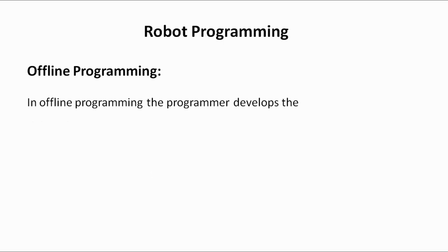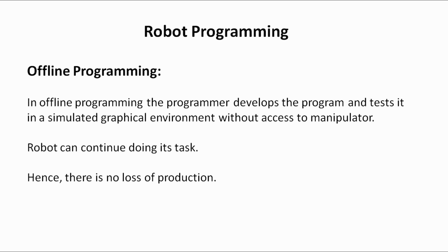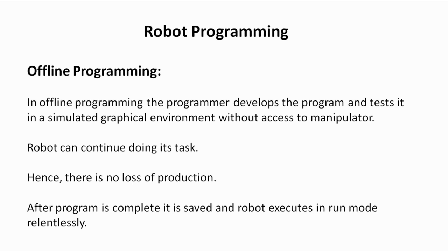In offline programming, the programmer develops and tests the program in a simulated graphical environment without access to the manipulator. The manipulator is not engaged — it continues the production process while the programmer writes and tests the program in the simulated environment. So there is no loss of production in offline programming. After the program is completed, it is saved and the robot executes in run mode relentlessly. That was all for this lecture — see you in the next lecture.